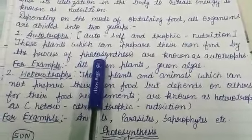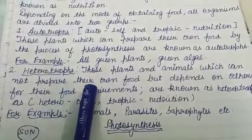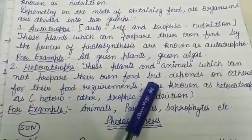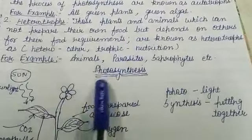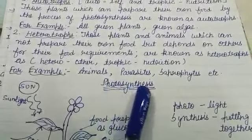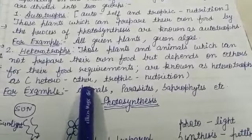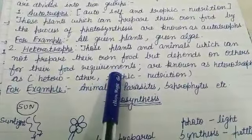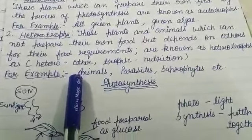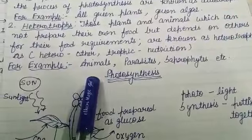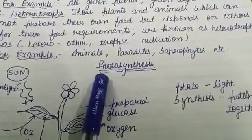The second group is heterotrophs. Those plants and animals which cannot prepare their own food and depend on others for their food requirements are known as heterotrophs. They do not have the machinery needed for photosynthesis, so they depend on other animals or plants for food. Examples include animals, parasites, saprophytes, and insectivorous plants.